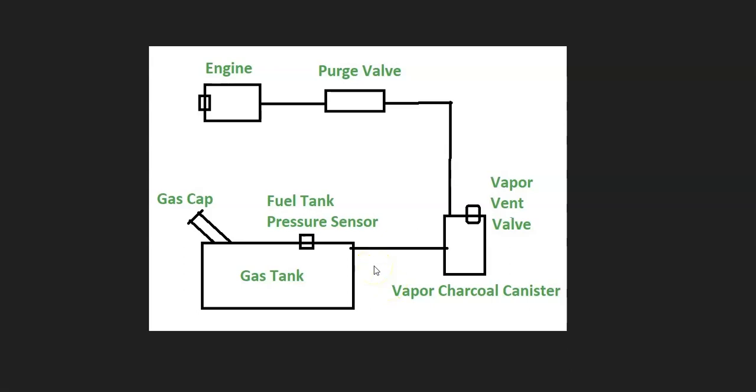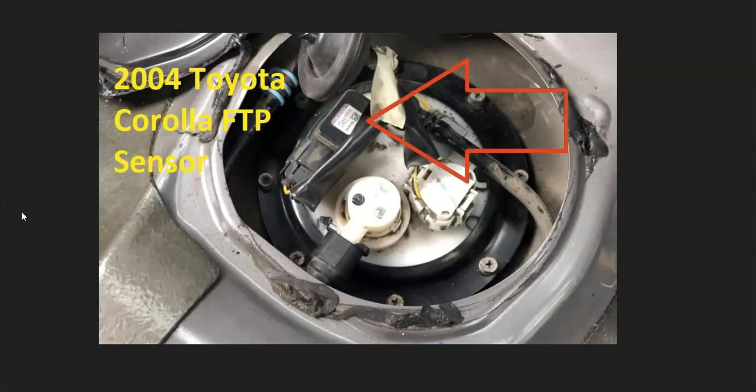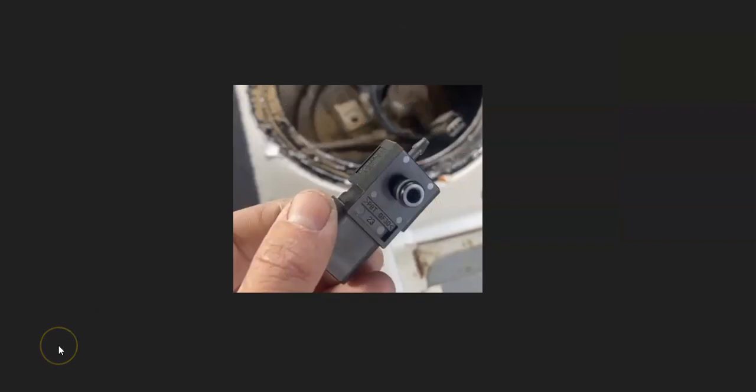If you can't find any leaks, then it's possible the fuel tank pressure sensor has failed. That sensor reports back to the computer what's going on inside the system, so if it fails it might send back bad data and there might not be anything wrong with the system, but the computer thinks there is. The fuel tank pressure sensor is usually located on the fuel pump. If everything else tests good, then check the fuel tank pressure sensor.